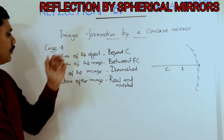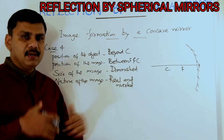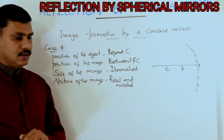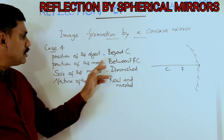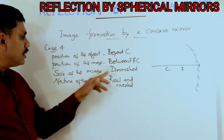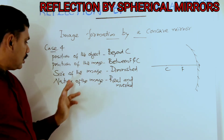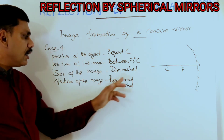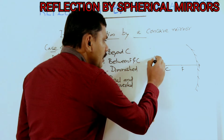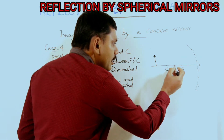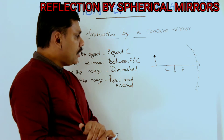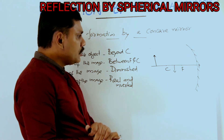Case four: the position of the object is beyond C — we place the object beyond the center of curvature. The position of the image is between F and C. The size of the image is diminished, and the nature of the image is real and inverted.